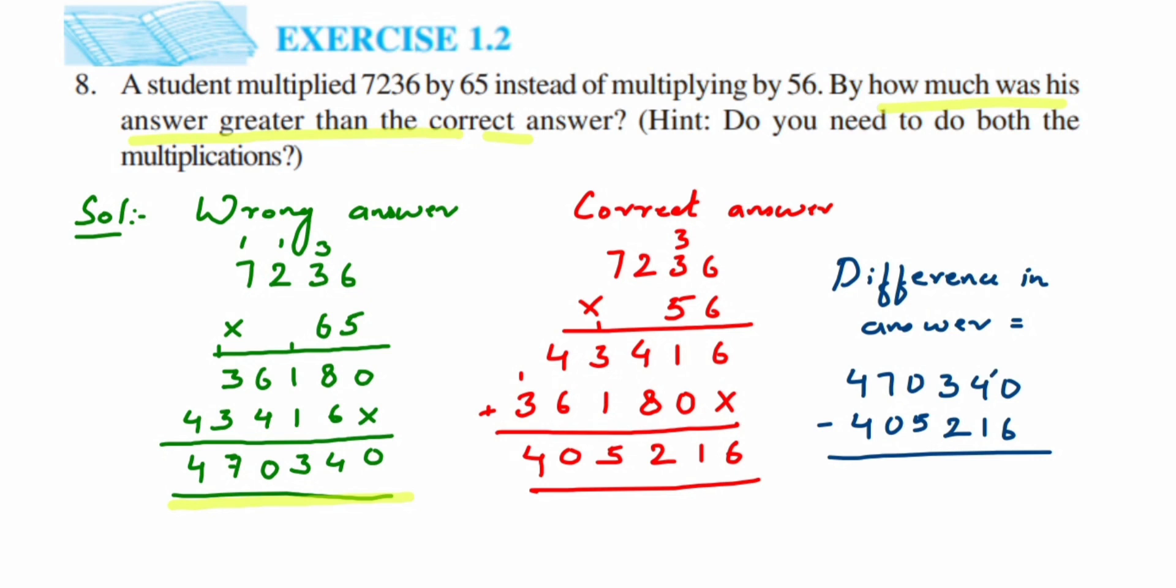So we cannot subtract 0 and 6, we'll take a borrow from 4, it will become 3 and this will become 10. So 10 minus 6 is 4, 3 minus 1 is 2, 3 minus 2 is 1. 0 minus 5 we cannot do, so we're going to take a borrow from 7, this will become 6 and this is 10. So 10 minus 5 is 5, 6 minus 0 is 6, and then 4 minus 4 is 0. So the answer we got here is 65124.